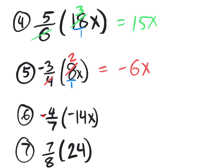Number six says negative four divided by seven times 14x. The denominator seven means divided by seven. Is 14 divisible by seven? Yes — 14 divided by seven is two, so you really have a two x in here. Negative times negative is positive, and two times four is eight, so the answer is eight x. Showing our work: put 14 over one, reduce 14 over seven to get two, leaving negative four times negative two x, which is positive eight x.